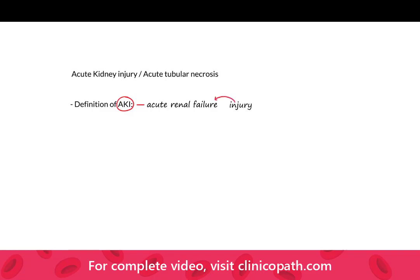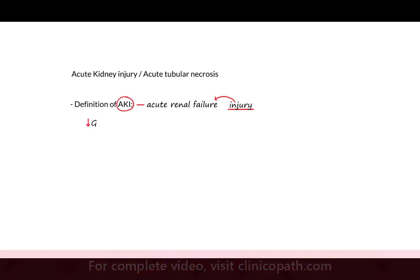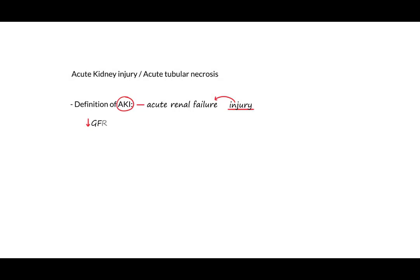Failure means that we're going through all of the lack of homeostasis, whereas injury is just a partial decompensation. There are lots of insults to the tubule that give you a decrease in GFR, and in most of clinical medicine that's going to be associated with an increase in creatinine of greater than 50%.